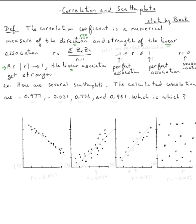Perfect association will be r equal negative one. In other words, the absolute value of r equal one means perfect linear association.